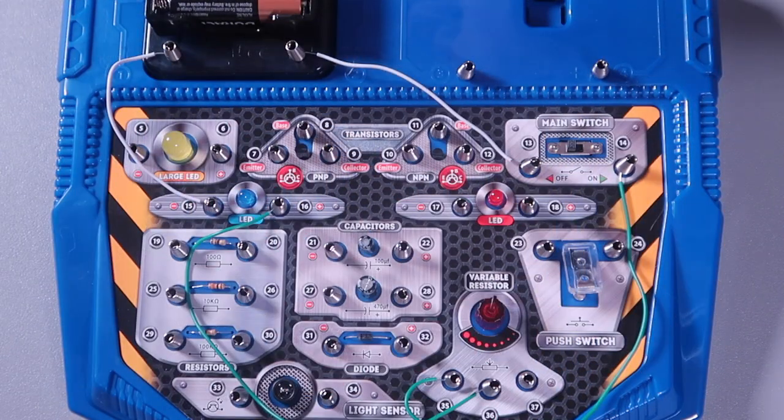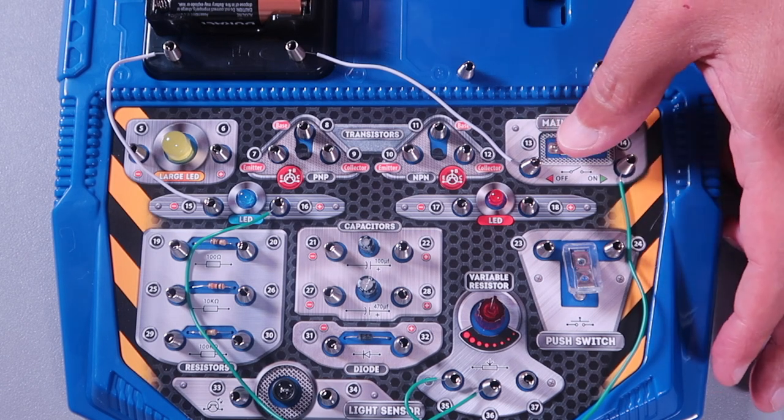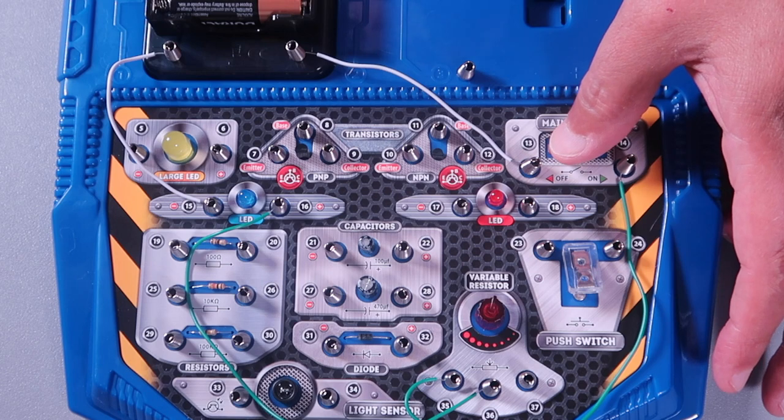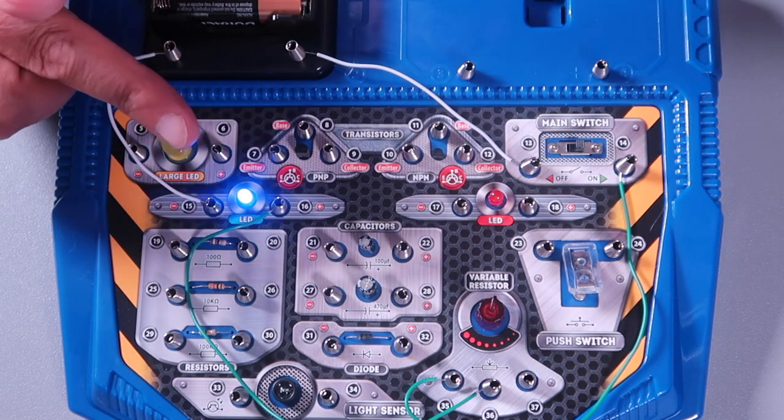Here's another experiment to demonstrate a variable resistor. So on this one, it's connected to the main switch. And as you can see, the blue LED comes on.